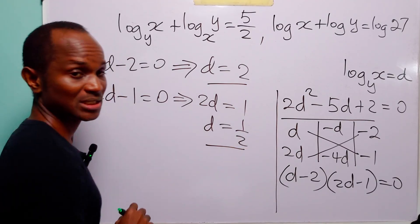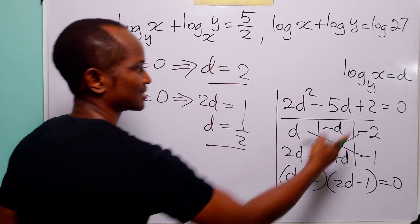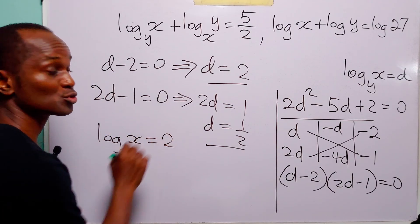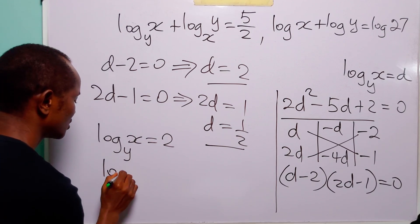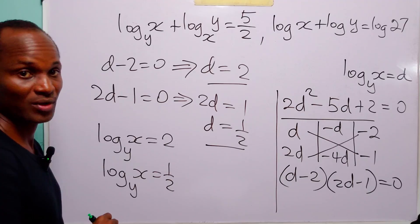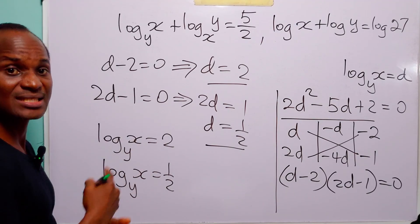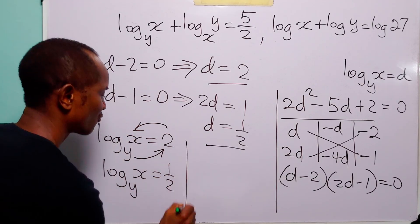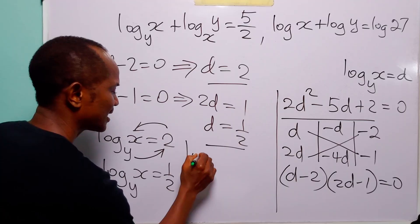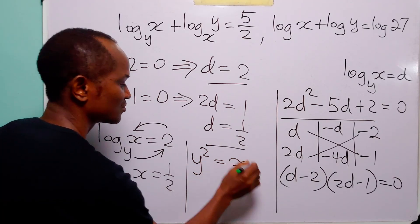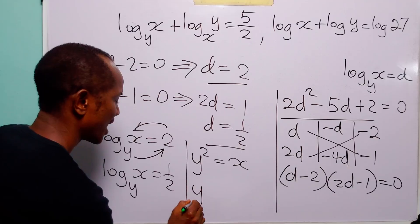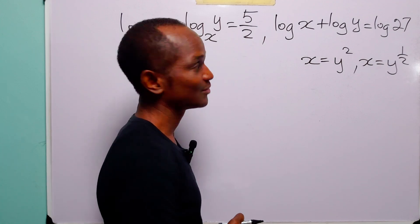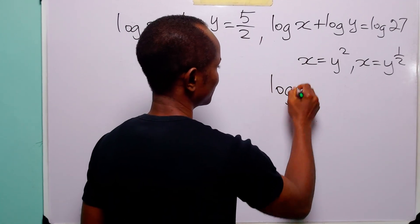We now have two values for d — 2 and one half — which means either log to base y of x equals 2, or log to base y of x equals one half. The first statement means y squared equals x, and the second means y to the power one half equals x. So we have either y squared equals x or y to the power half equals x.